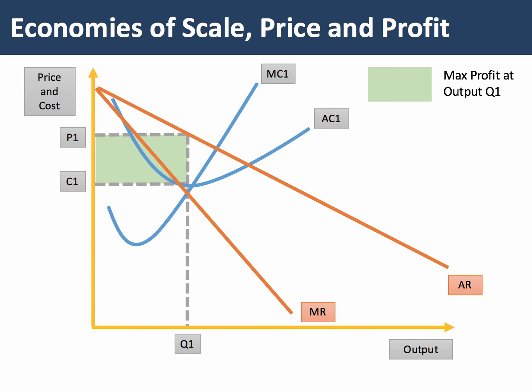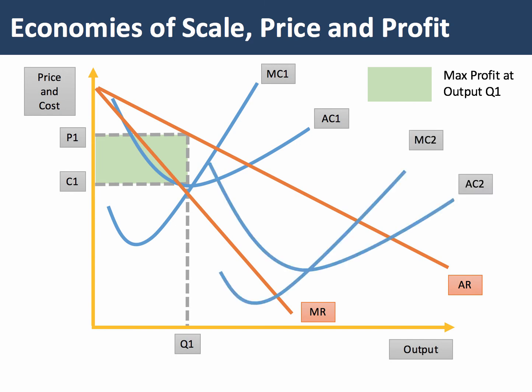Now with economies of scale, costs will fall — unit costs will fall. I'm going to show a set of cost curves MC2 and AC2 which are significantly lower, and the firm can operate on a higher scale of production.